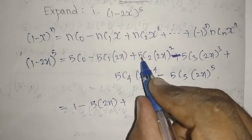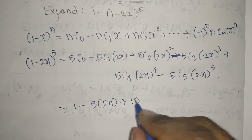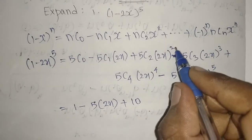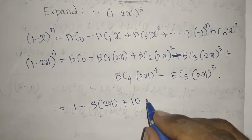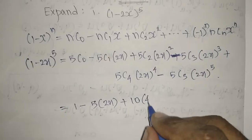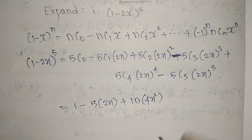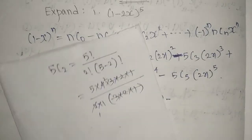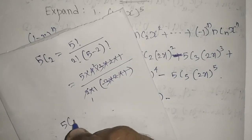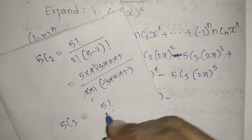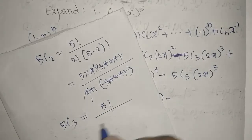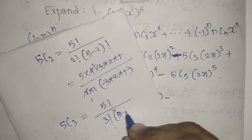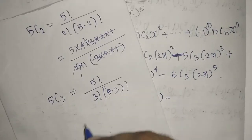So 5C2 is 10. Applying the power: (2x)^2 equals 4x^2, giving 10×4x^2 = 40x^2. Then for the next term, minus 5C3: applying the formula, 5 factorial divided by 3 factorial times (5 minus 3) factorial.